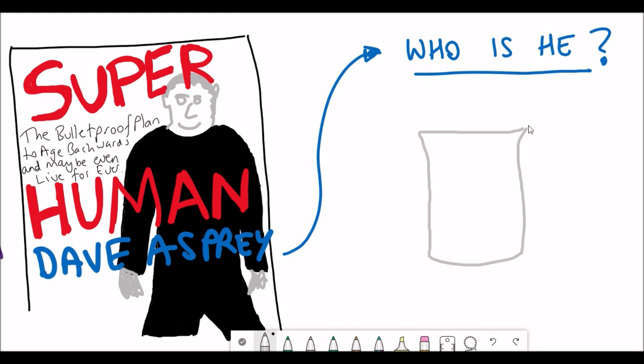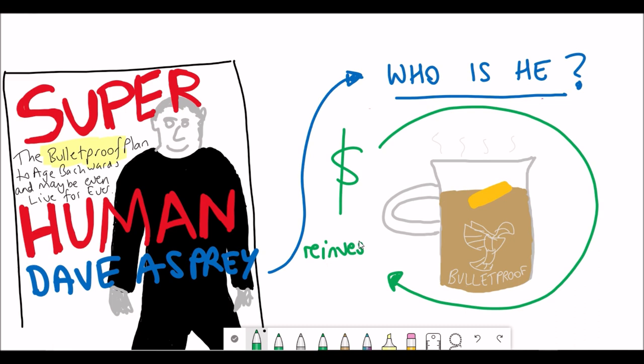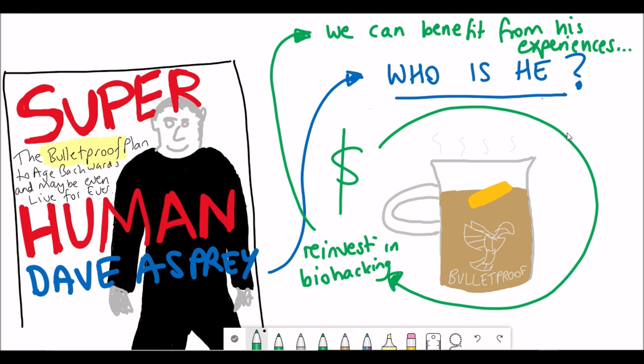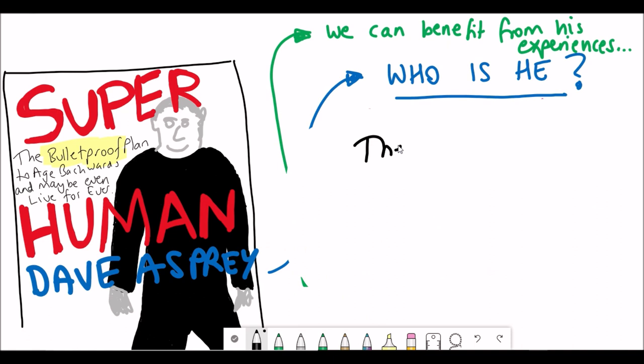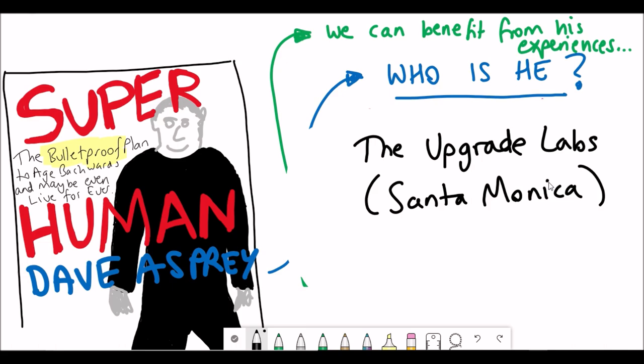If you didn't know that Dave Asprey was the founder of Bulletproof Coffee, you certainly will by the end of this book with the number of references. It's kind of given that Bulletproof is in the subtitle. Maybe some of the money for these biohacks would go back into his pocket, but at least he could invest that money in trying new biohacks to further inform us. He also owns the Upgrade Labs in Santa Monica where many of these biohacks can be performed.